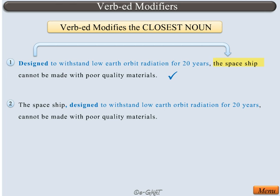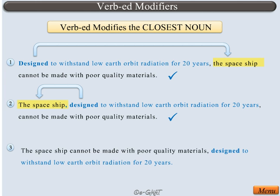In the next example, the modifier has been placed right after the noun that it modifies. In the last example sentence, the placement of the modifier has been changed, and in this repositioning, the modifier no longer modifies the spaceship — it modifies the closest noun, 'materials,' due to which the sentence has lost its intended meaning. Saying that poor quality materials are designed to withstand low earth orbit radiation for 20 years is incorrect. So always make sure that the VERB-ED modifier is placed correctly such that it modifies the closest noun appropriately.